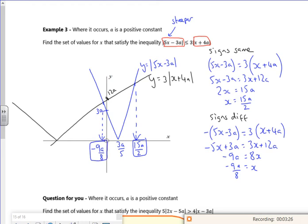Right, so where am I looking? I'm looking where the blue v, I've done it in color. So the blue v is less than or equal to, so it's below the black shallow v there. So the blue bit is below my black bit between these two there. So it's one contained bit, so it's minus 9a over 8 to 15a over 8.